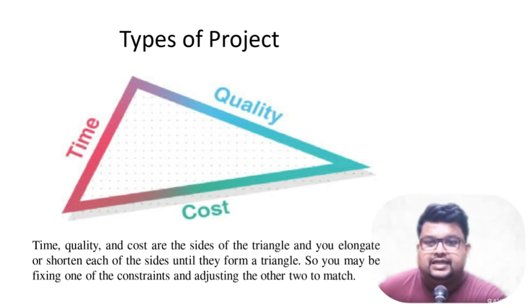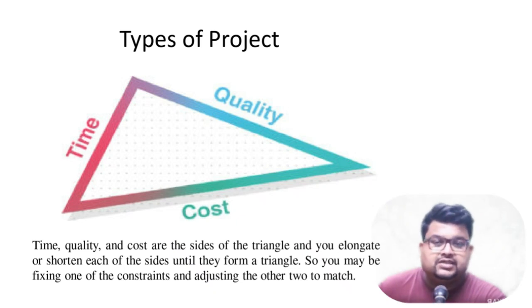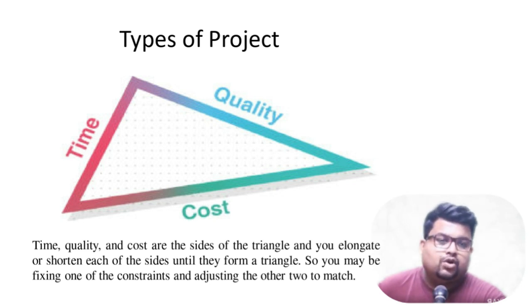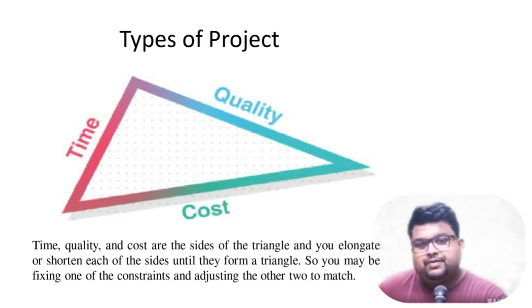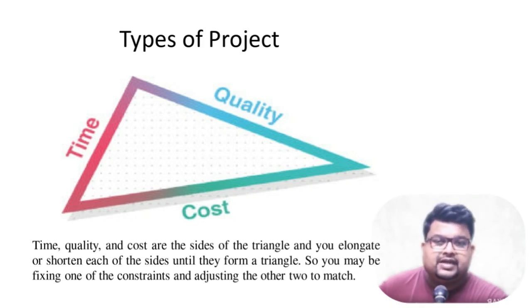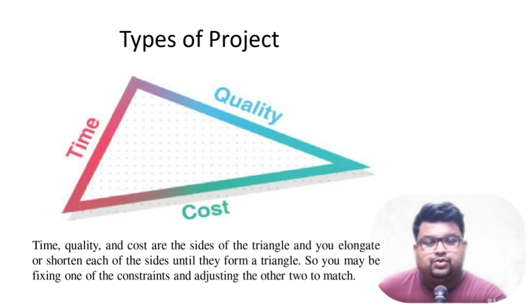Yes — time, quality, and cost. So time, quality, and cost are the three sides of the triangle related to the project. If you elongate or shorten each side until they form a triangle, you may be fixing one of the constraints and adjusting the other two to match. If you are told to complete it in a fixed time, it will affect quality and cost. If you insist on a certain quality, it will affect time and cost. If you say complete the project within this cost only, it will affect time and quality. We will see all these things in our upcoming lectures — that's all for today's lecture.